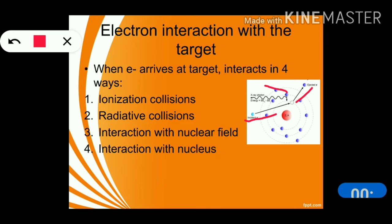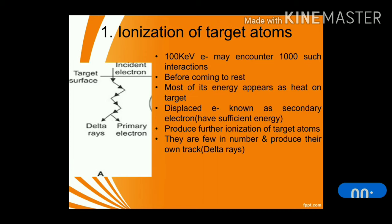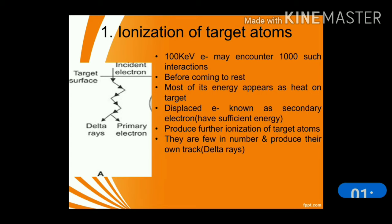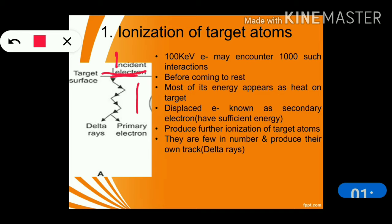The third one is the interaction with the nuclear field, and the fourth one is the interaction that produces direct heat, which is the interaction with the nucleus. Now, regarding ionization of target atoms: when fast-moving electrons enter the surface layer of the target, they undergo collisions.